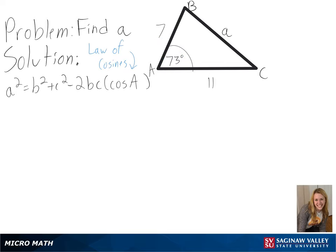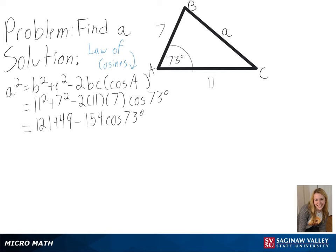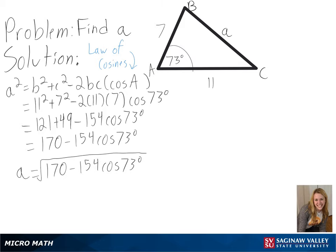We will first plug in our values and then simplify as much as we can without rounding to get a equals the square root of 170 minus 154 times cosine of 73 degrees as our exact answer. We could also approximate this to get around 11.18 as our final answer.